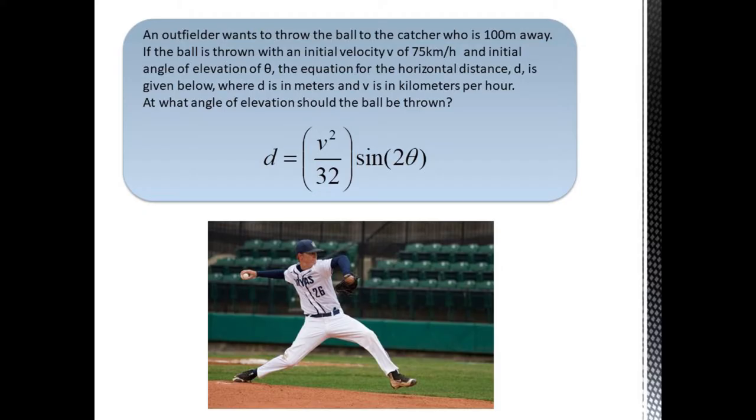Let's finish with a few applications. For our first example, we have a baseball player throwing a ball from outfield to home plate. The horizontal distance the ball travels depends on the initial velocity and the initial angle. The equation is shown below. If the ball is thrown with an initial velocity of 75 kilometers per hour, what angle should the outfielder use if it's 100 meters to home plate?